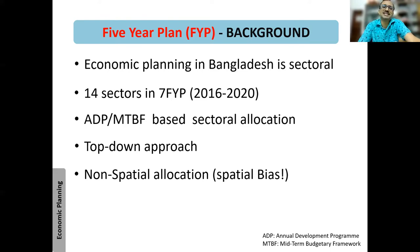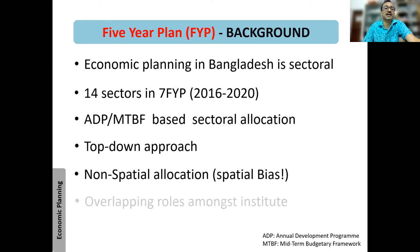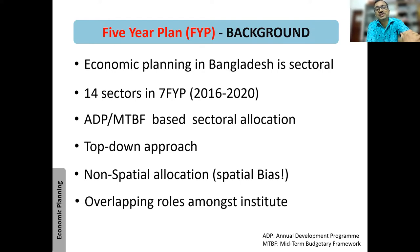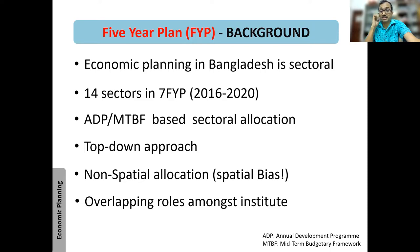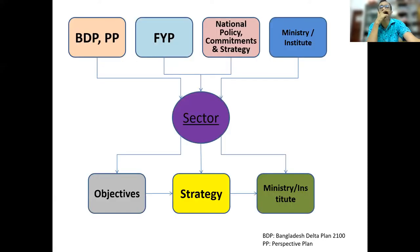It's a non-spatial allocation in the sense that it is sectoral: transport sector gets this much money, that's all. Within that, however, there is a spatial bias — big cities are getting more money. We also see overlapping roles among institutions; the same jobs are done by different institutes, and sometimes they do not integrate with each other.